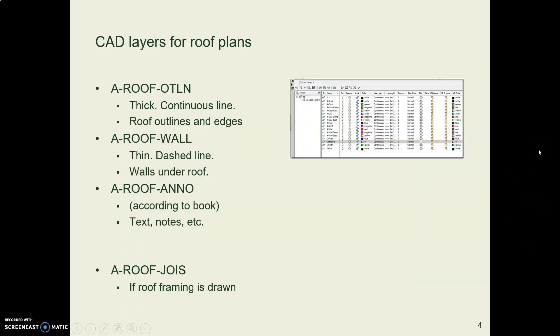The CAD layers start with A for architecture, and then roof. So when we did our floor plans we went A wall. Now when we're doing roofs we say A roof, and then we have an outline, the wall under the roof that's a dashed line, some text, and maybe if we're doing roof framing a joist layer. We're not in our assignment.